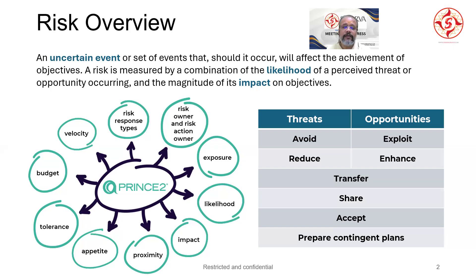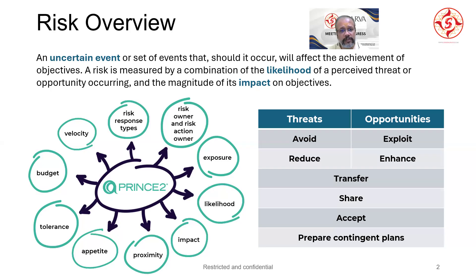The next factor is velocity: the speed at which the risk is nearing on my proximity scale. Then we have risk response types, which I'll detail in a moment. I also need to identify the risk owner and the risk action — who will be taking action if and when the risk occurs. As we saw in the definition, risk can be positive or negative: the positive risk is called an opportunity, the negative risk is called a threat.